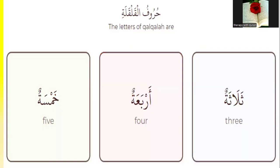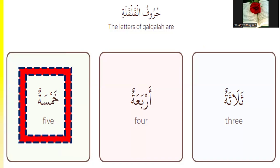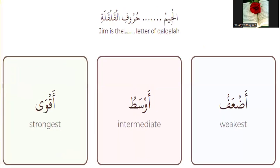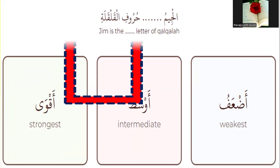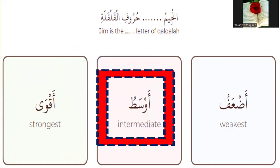Number one: the letters of qalqala — how many are there? Yes, five. For QUTBA DAL. Number two: the letter Jeem — is it the weakest, intermediate, or strongest level of qalqala? Yes, intermediate.